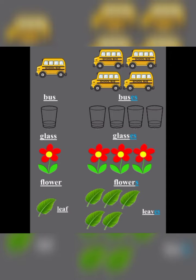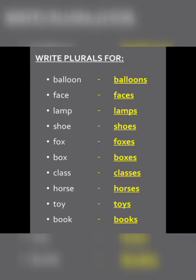Now children, we will do some more examples in our English One notebook as it is very important. Questions are there in the unit test also. Balloon becomes balloons (b-a-ll-oo-n-s). Face becomes faces (f-a-c-e-s).